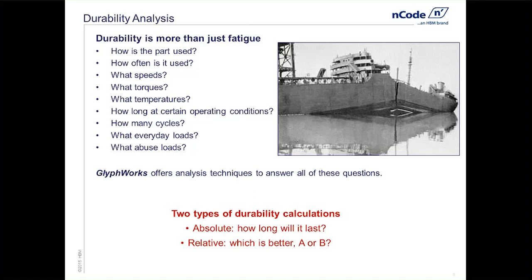There are two specific types of durability calculations. The first is the absolute calculation, which answers how long something will last — giving an absolute answer like 20,000 flight hours, 500,000 miles, or a million cycles. The second is the relative calculation, which answers which design is better, A or B — giving a result like part A will last 10% longer than part B, or part B will fail in some fraction of the life of part A.